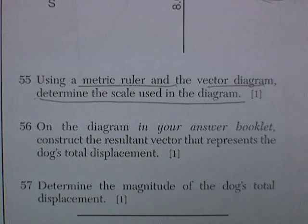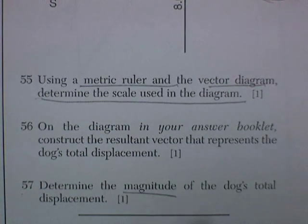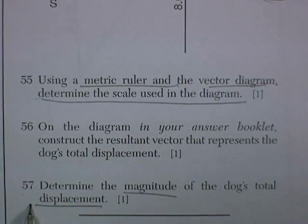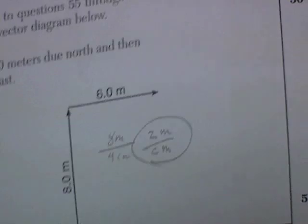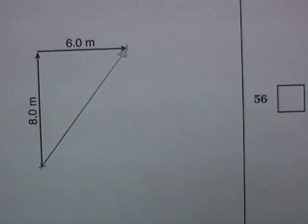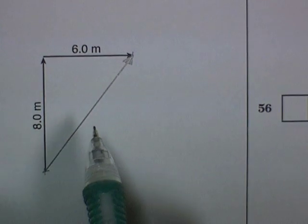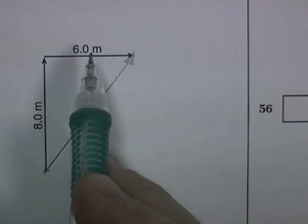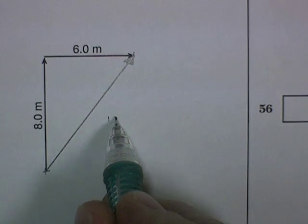And now question 57. Determine the magnitude of the dog's total displacement. So we can do it two different ways. We can say it's a 3, 4, 5 right triangle. So 6, 8, this ought to be 10 meters.